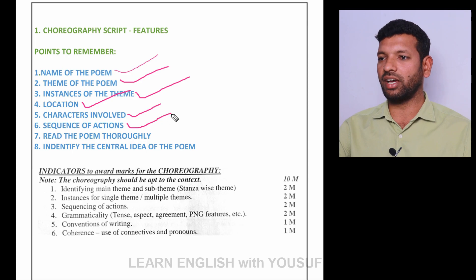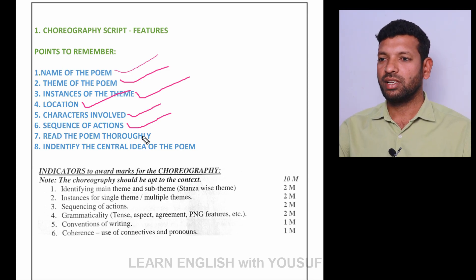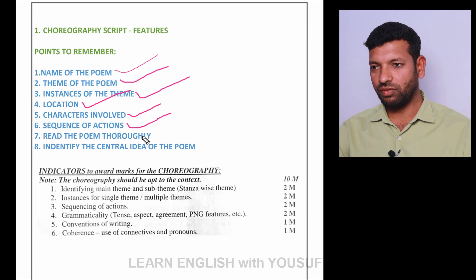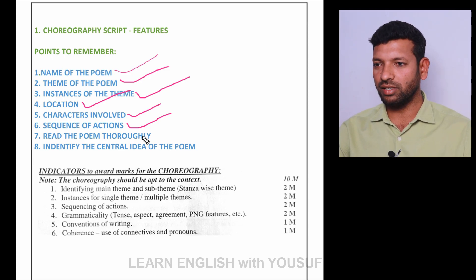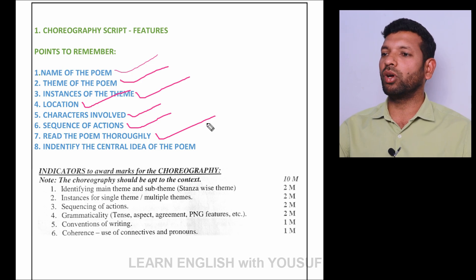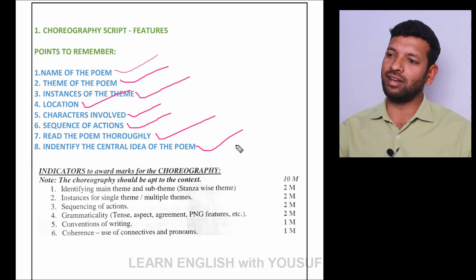The sixth point is the sequence of action — what sequences in the action you are going to frame according to the poem. For example, if you take 'Another Woman,' the first sequence of action: the mother-in-law enters the market, some students stand up and create the setting of a vegetable market, where the daughter-in-law enters and goes on purchasing, asking the vendors about white radish and green methi. The seventh point is to read the poem thoroughly, then only you can understand. The eighth point is to identify the central idea of the poem.